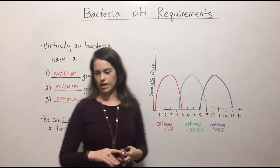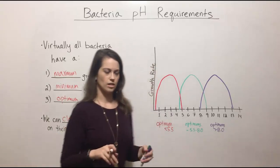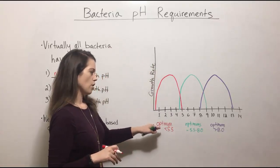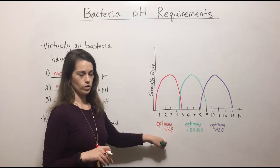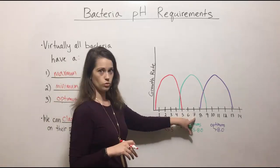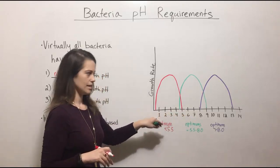So the first group of bacteria that we can classify based on pH requirements are those that have an optimum at pH of 5.5 or less. Remember that 7 is neutral. Anything less than that is acidic.